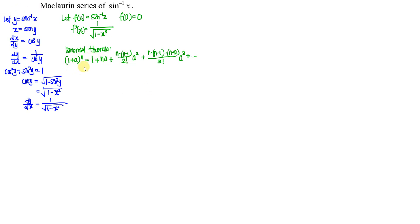Using this approach, we can expand the denominator using the binomial theorem. We rewrite it as 1 plus (negative x squared), the whole thing to the power of 1 over 2, since this is a square root. From here, we can see that n is now one half, and a is now negative x squared. So we just substitute n and a respectively into the equation.